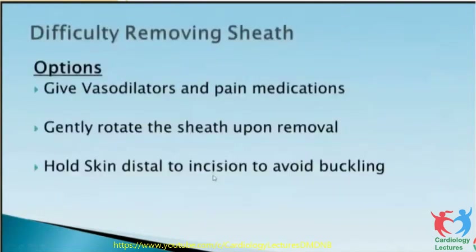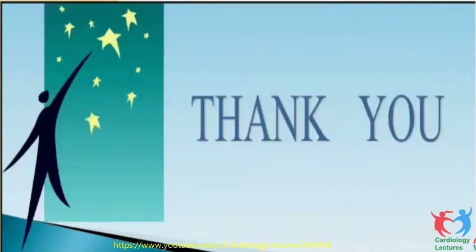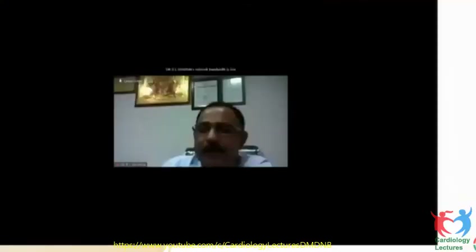When there is difficulty removing the sheath after spasm, the options are: give ample vasodilators and pain medications, sedate the patient and ask the patient to cough, gently rotate the sheath upon removal, and hold the skin distally to the incision to avoid buckling. That concludes my presentation — thank you very much.